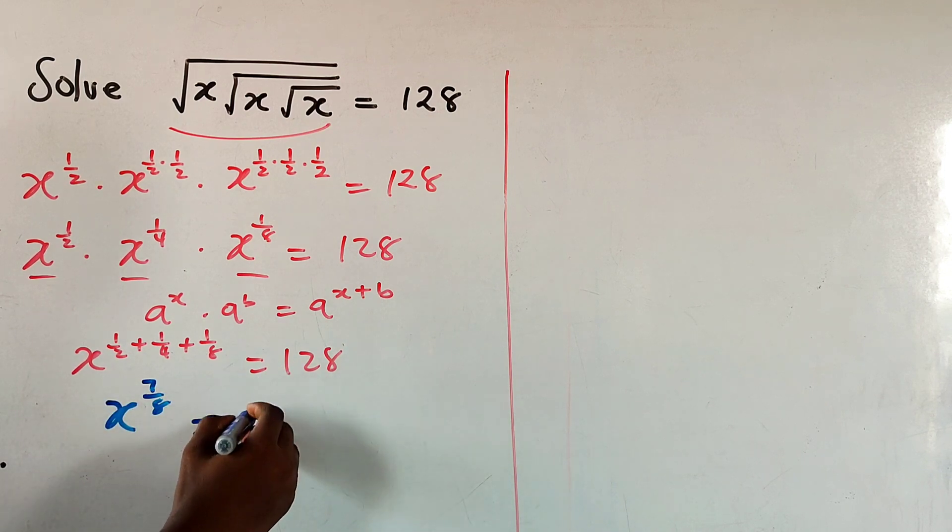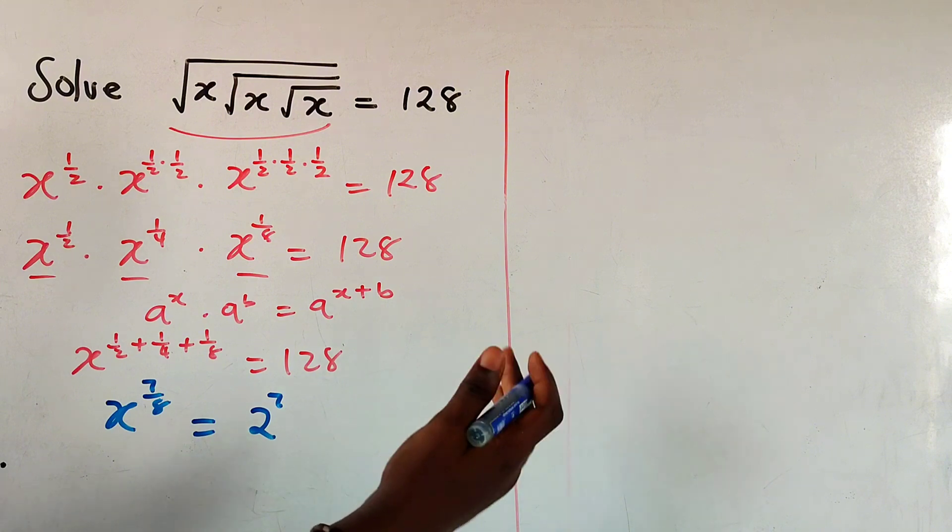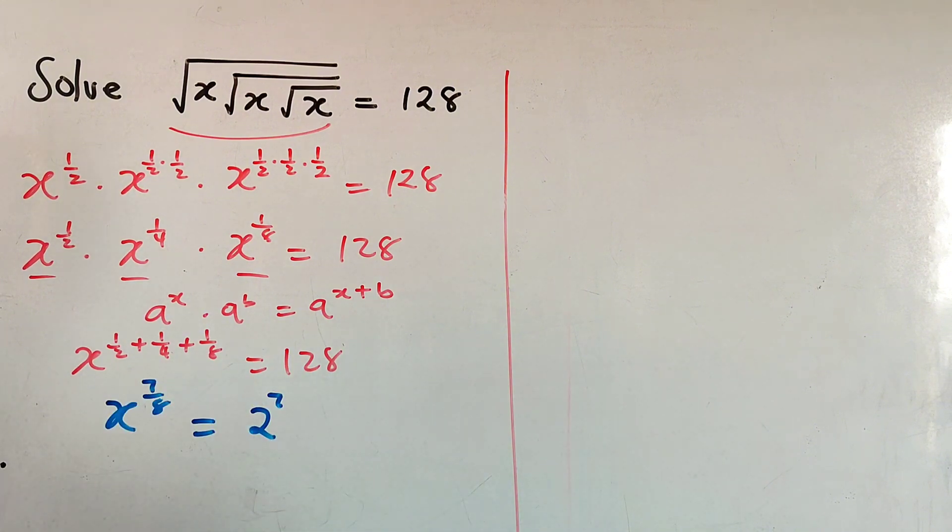And I can rewrite this as 2 to the power of 7. 2 times 2 times 2, 7 times will give you 128.